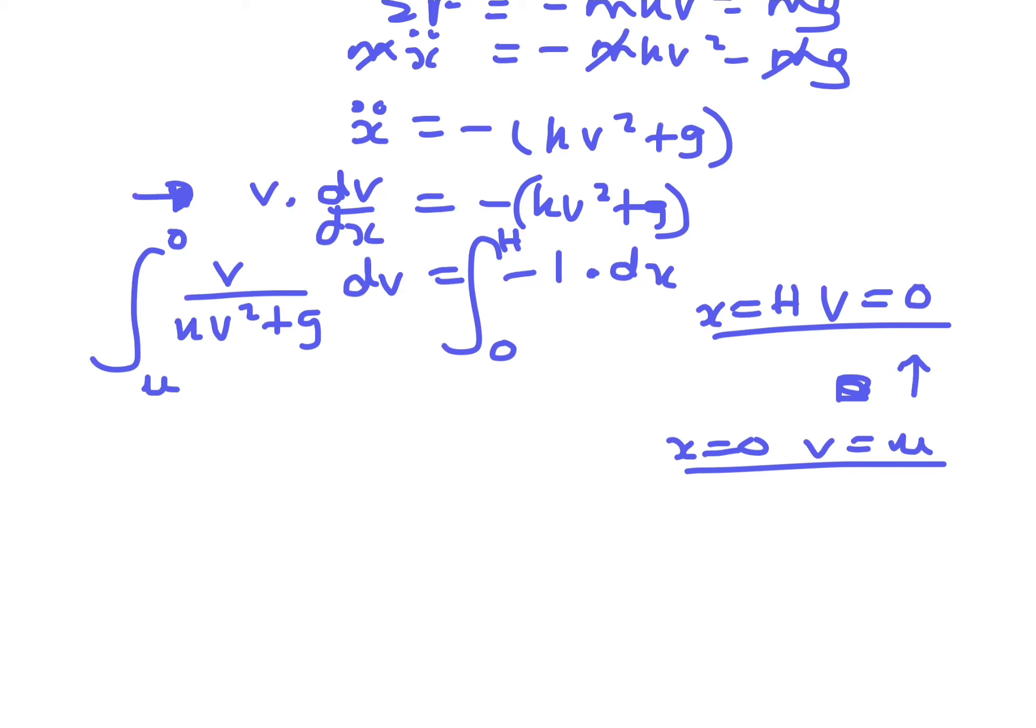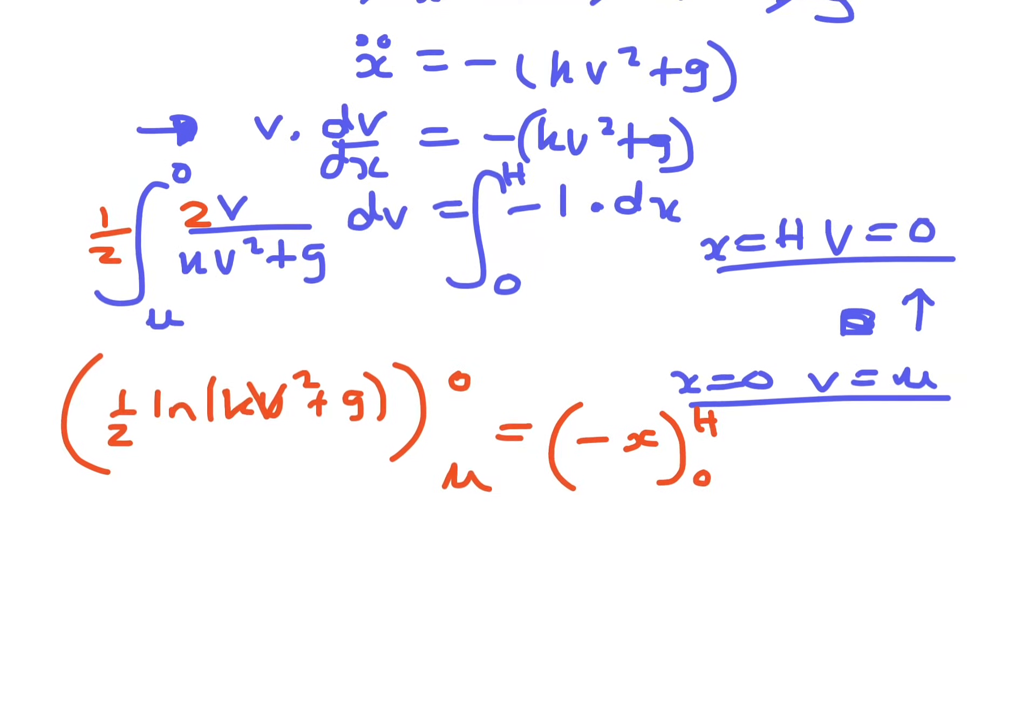Now, this first one here is just a log. There really should be a 2 in there and a half, so it's a half ln of kv squared plus g, and that is from u to 0, and this is minus x, and that's from 0 to h.